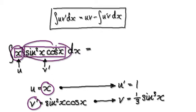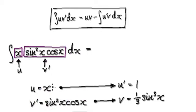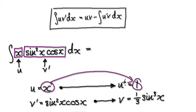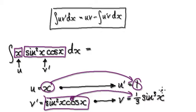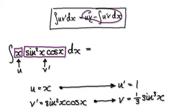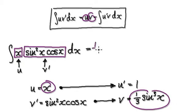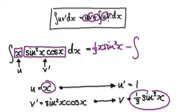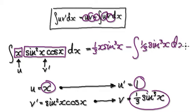Let v prime be this whole block here. So if u equals x then u prime would be one. If v prime equals this block, then integrating it will give you this. Now blindly follow the formula — it's saying get u times v, so that would be one third x sine to the power of three of x, and then minus the integral of u prime times v, which would be one third sine to the power of three of x dx. You see this is slightly simpler to integrate.